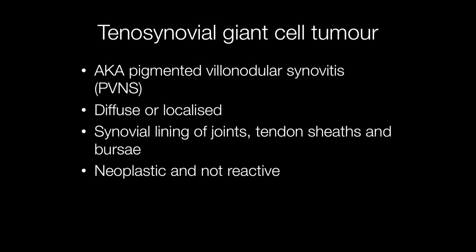The diffuse type of tenosynovial giant cell tumour is also known as pigmented villonodular synovitis, or PVNS. The localised type is also known as giant cell tumour of tendon sheath. Tenosynovial giant cell tumour may arise from the synovial lining of joints, tendon sheaths and bursae. It is now accepted that tenosynovial giant cell tumour is a neoplastic lesion and not reactive.